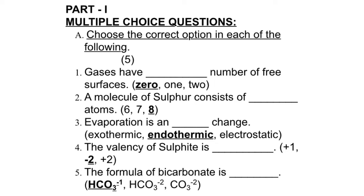Second, a molecule of sulfur consists of eight atoms. Third, evaporation is a dash change - it is endothermic change because evaporation is a surface phenomenon and it absorbs all the heat from the surrounding. The valency of sulfite is minus two. The formula of bicarbonate is HCO3 minus one.